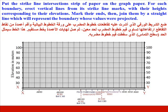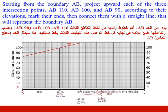Put the strike line intersection strip of paper on the graph paper. For each boundary, erect vertical lines from its strike line marks with heights corresponding to their elevations, mark their ends, then join them by a straight line representing that boundary. Starting from boundary AB, project upward each of the three intersection points AB 110, AB 100, and AB 90 according to their elevations, mark their ends, then connect them with a straight line to represent boundary AB.